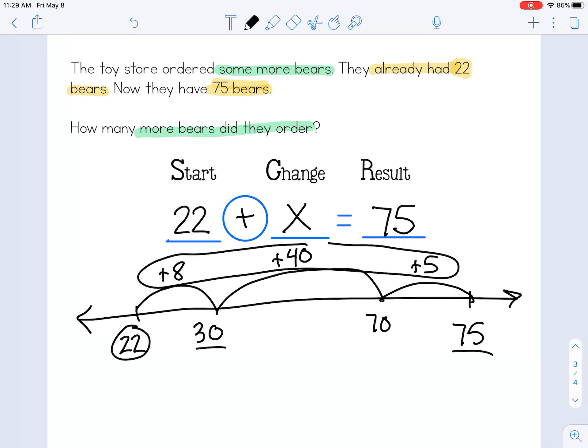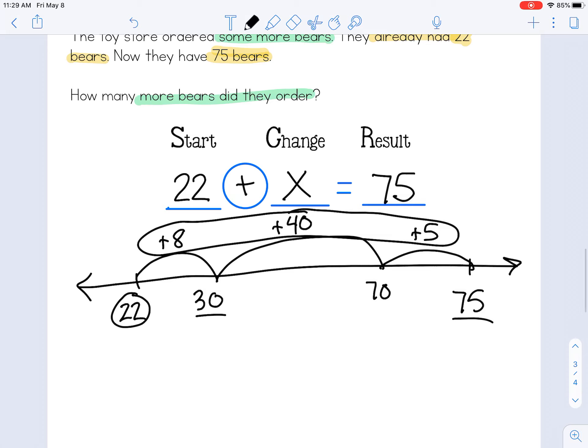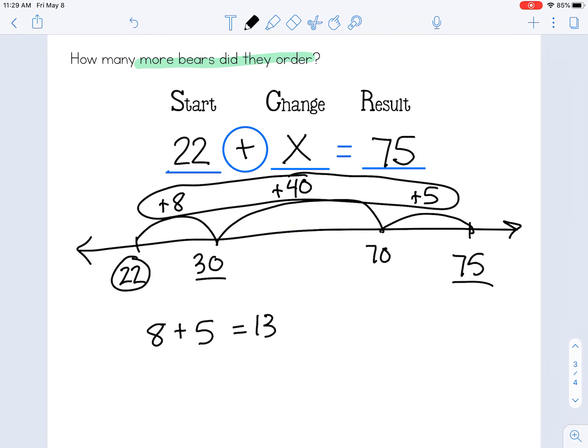Now here's my answer right here. So I know that 8 plus 5 equals 13. So then I can add 40 plus 13, which equals 53.